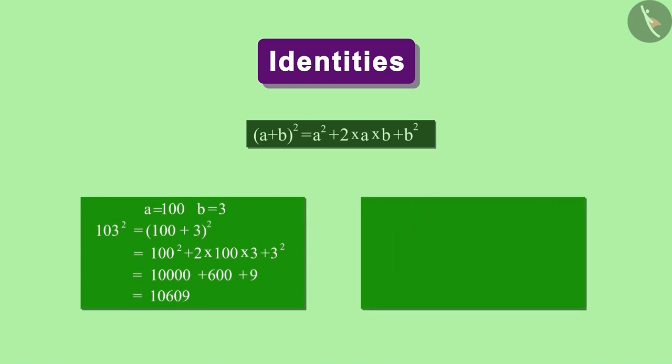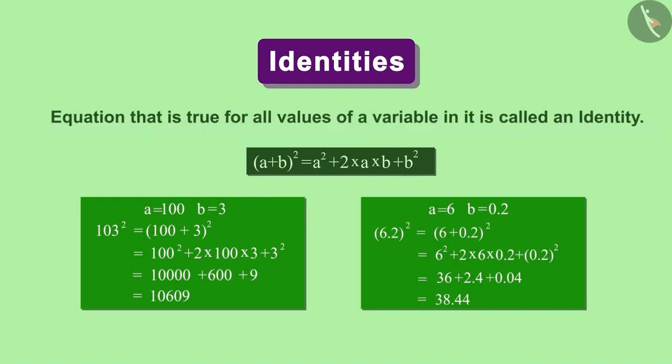Earlier, we considered A as 100 and B as 3. After that, we considered A as 6 and B as 0.2. Now you can stop here and try to put any other number in the place of A and B. You will see that this equation is true for any values of A and B. This type of equation which is true for every value of the variable in it is called an identity.